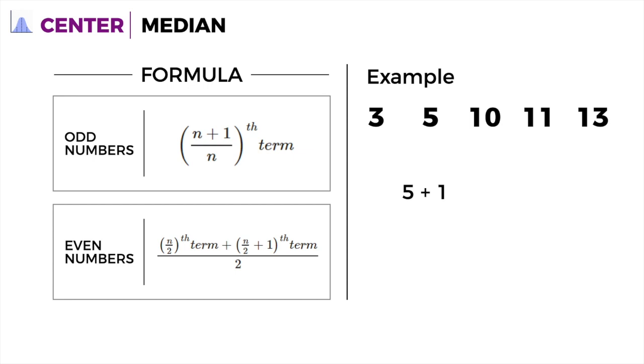That is 5 plus 1 divided by 2, and we get 3. This number does not mean you're going to look for a value that is 3. Instead, you're going to look at the third number in the data set.